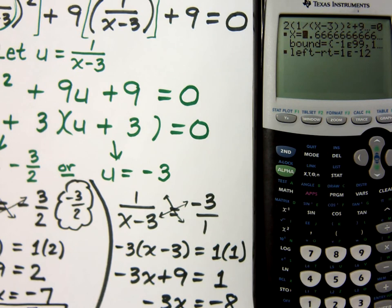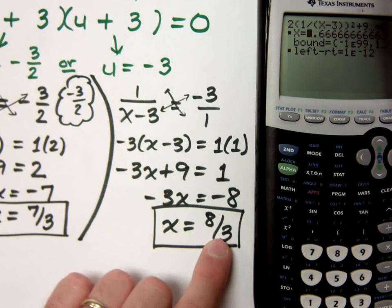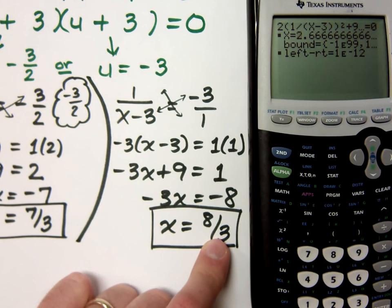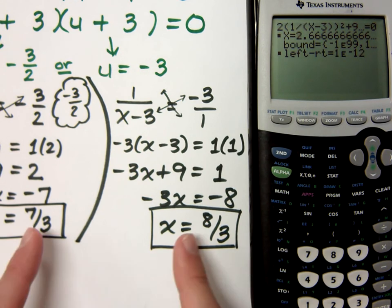Then I do get my other solution, which is 2 and 2 thirds, and that matches up with the 8 thirds that I had before. So we have to be very careful. It's not that there's something wrong with the calculator, but there are certain limitations, and there are certain hiccups we have, in particular in this problem, when x equals positive 3. So we just have to know how to work around that, and we can still come up with these two solutions.